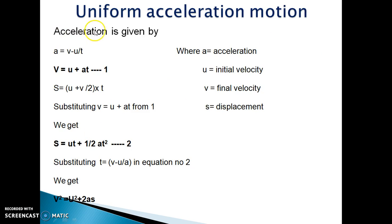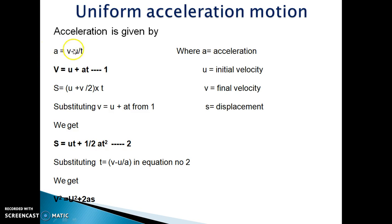Uniform acceleration formulas are derived as follows. We know that acceleration is nothing but the rate of change of velocity, which is given by the formula a = (v − u) / t. By simplifying this formula we get the equation v = u + at. This is the first equation of uniform acceleration motion.